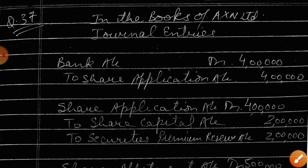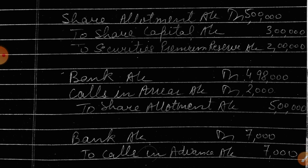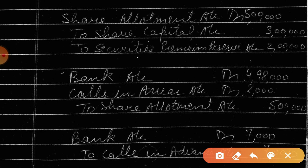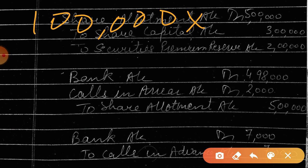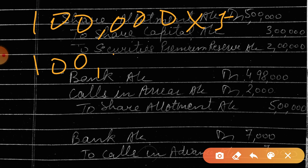Now what is the next entry? The next entry will be for allotment. Share allotment account debit to share capital and securities premium reserve. The amount was three plus two — one lakh into five rupees total. Share capital amount: one lakh into three, and securities premium will be one lakh into two. So this call will be made from the shareholders — that you have to pay the allotment money.